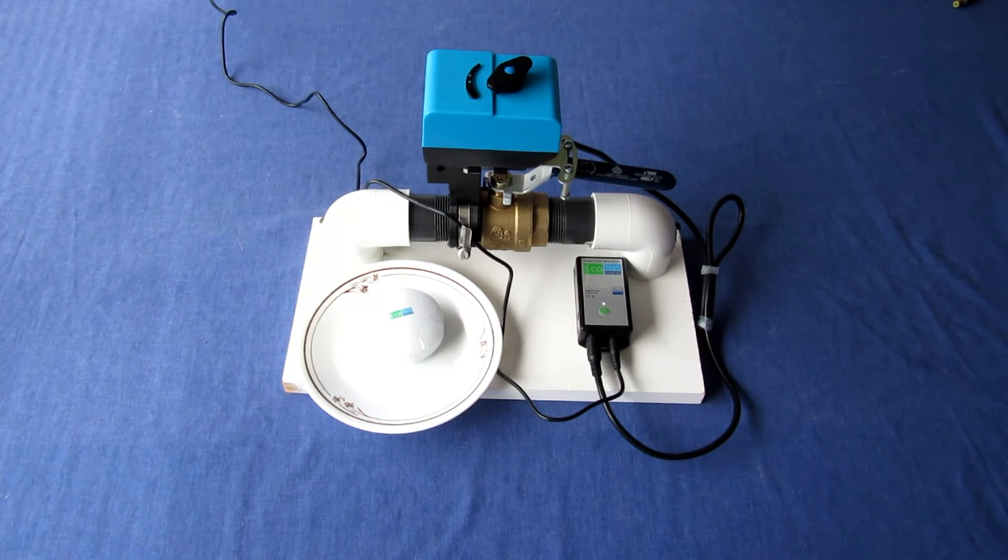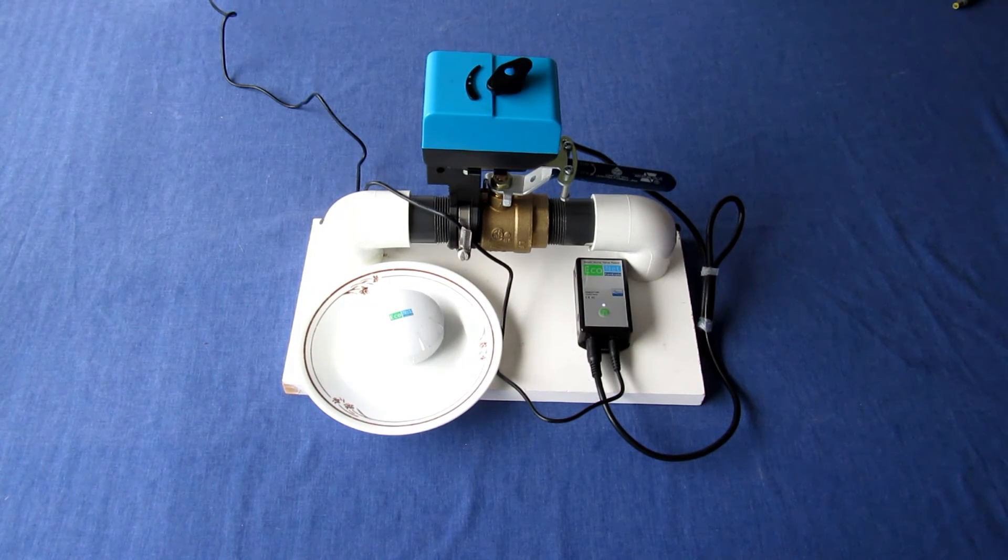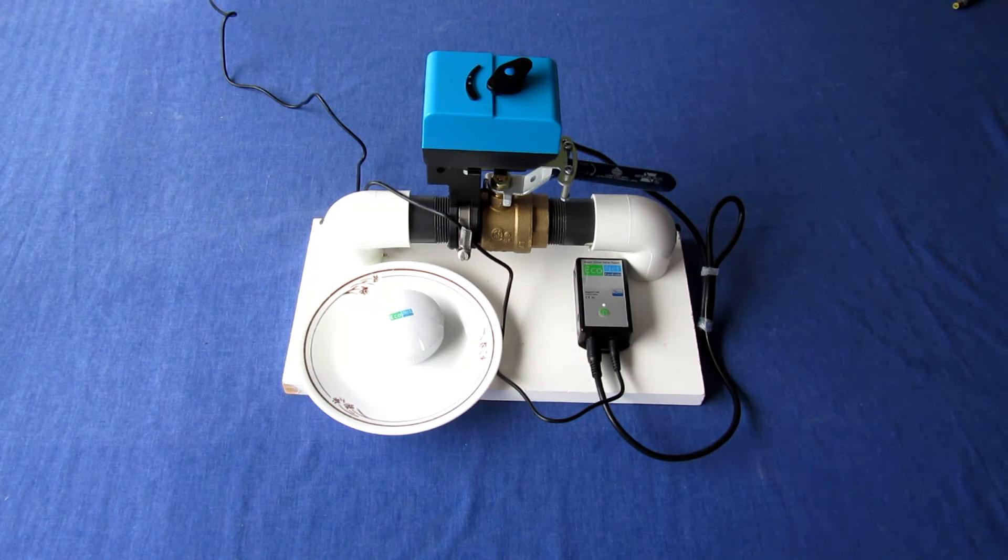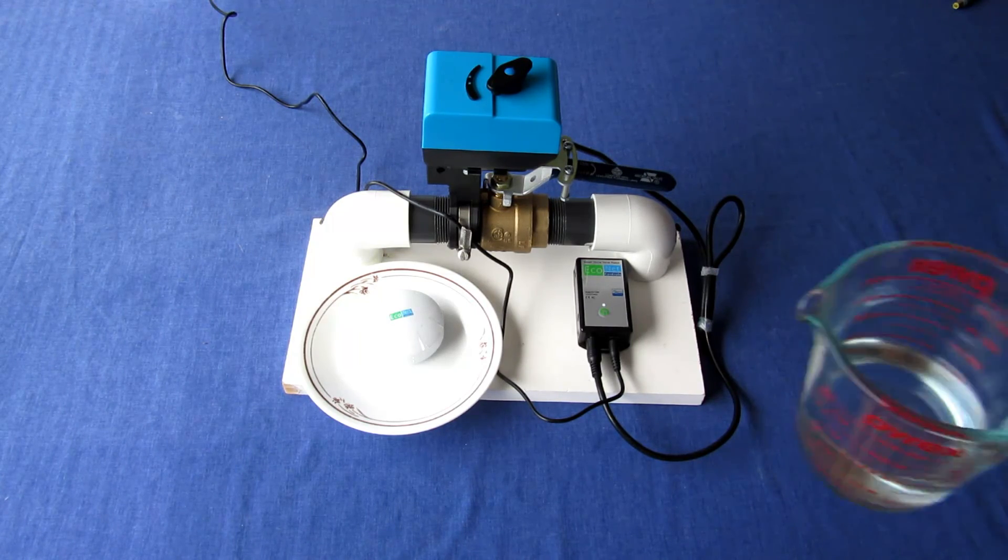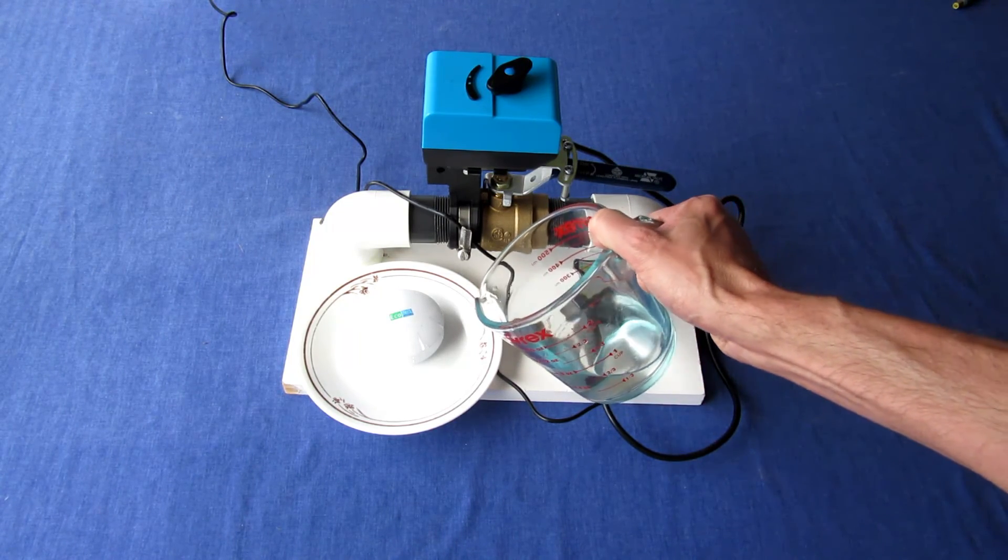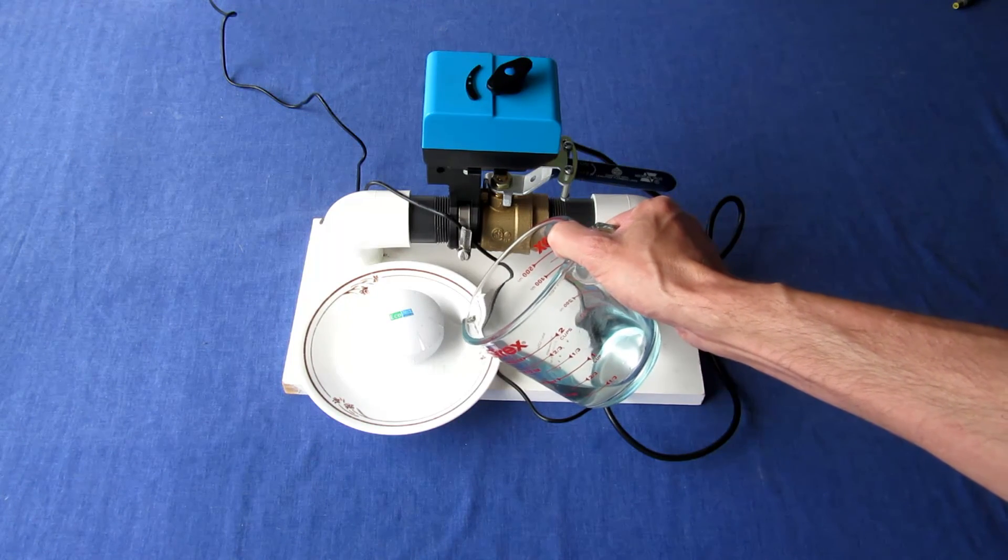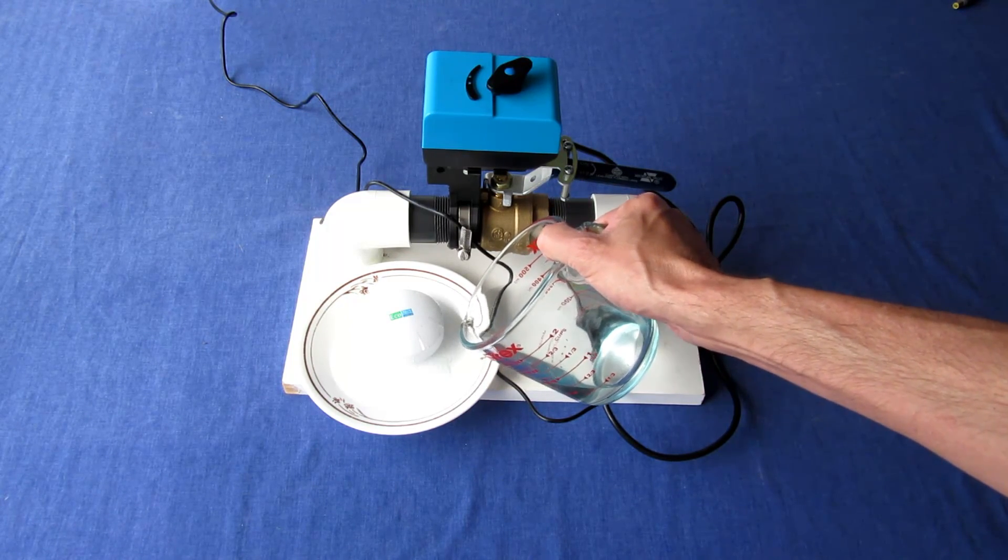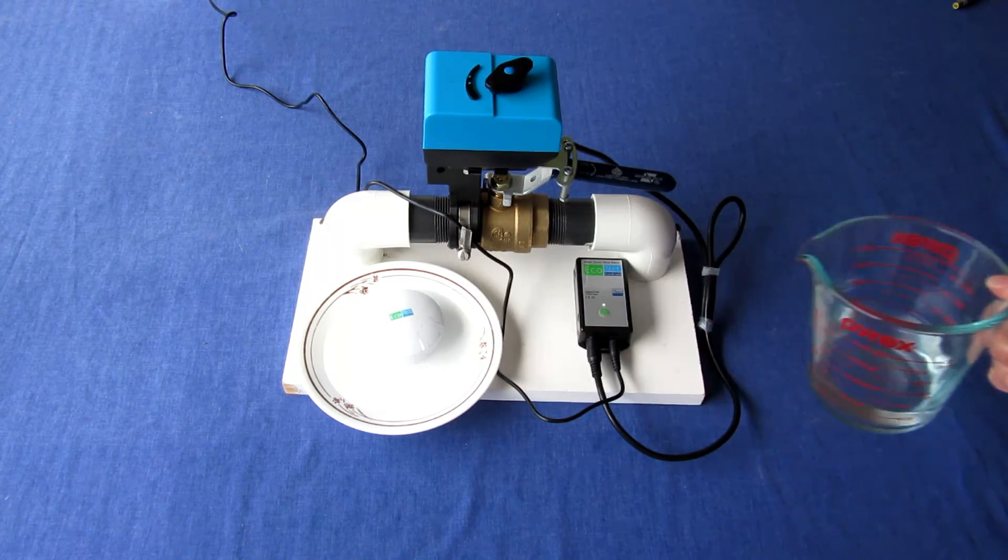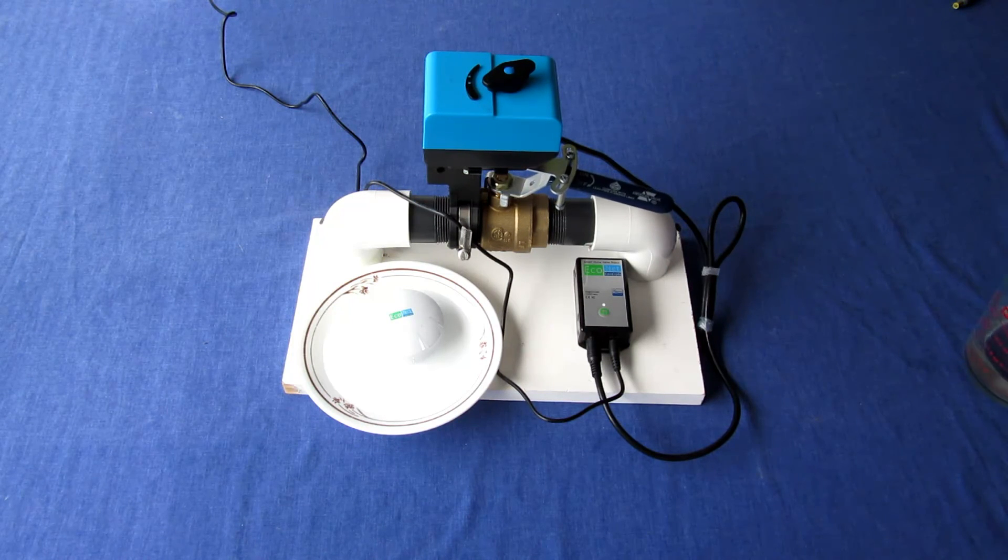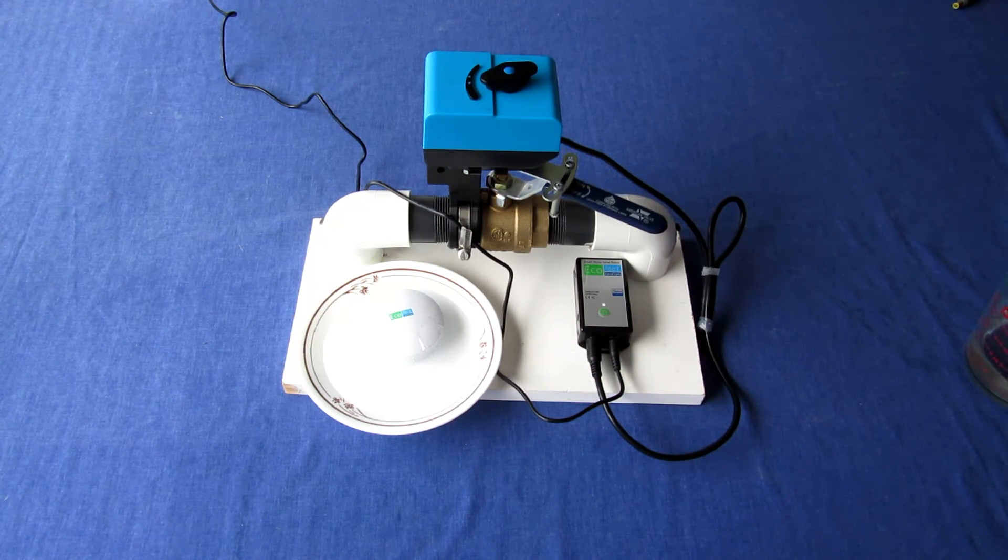We can now test the automation by ensuring the water valve is on and applying some water to the leak sensor. As soon as the sensor detects the water, the Bulldog shuts off the water valve and two notifications are sent to my phone running the SmartThings Classic app. One notification for the leak and one telling me that the water has been turned off.